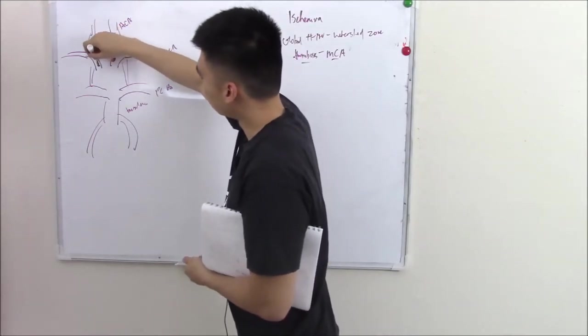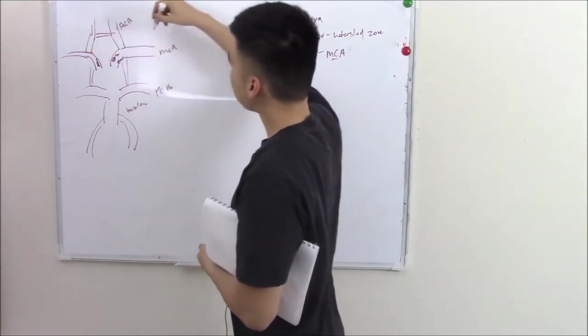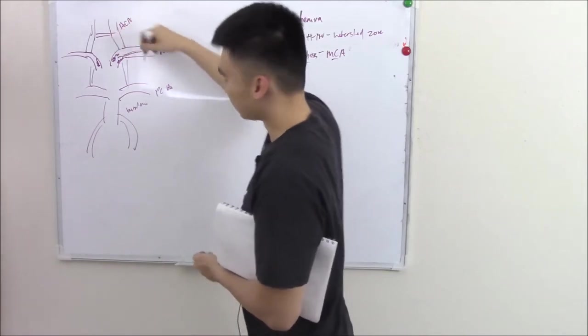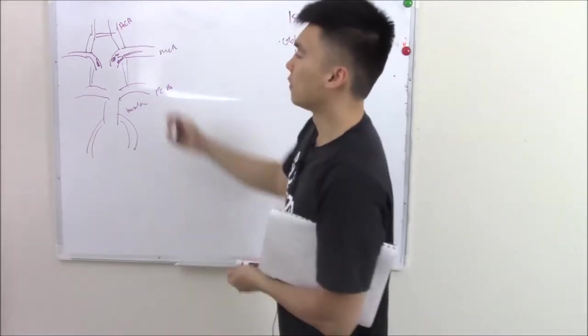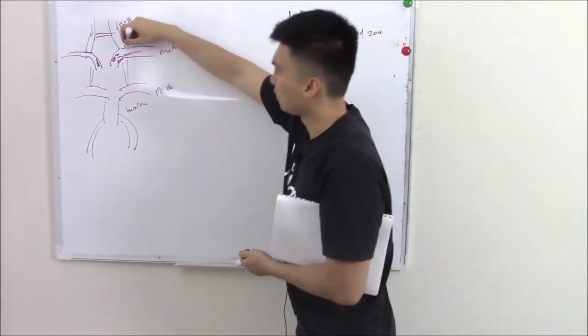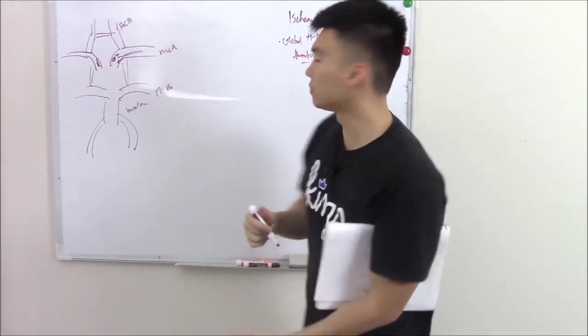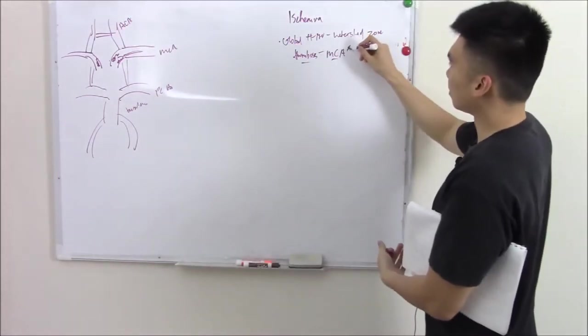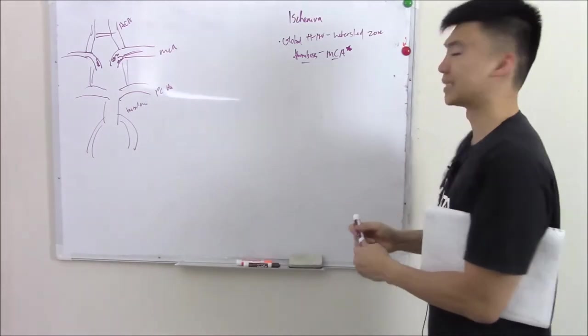Because atherosclerosis likes to hit common areas like your abdominal aorta, your popliteal, your coronary artery, and your internal carotids. And atherosclerosis can cause thrombosis, blood clots. And so it just seems natural that if it affects your internal carotid, it will more likely affect your MCA because it's more of a direct connection.